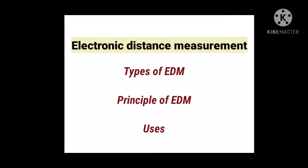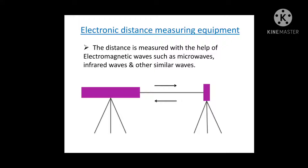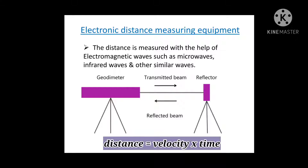In this video, let's discuss electronic distance measuring equipment used in modern surveying instruments. The distance is measured with the help of electromagnetic waves such as microwaves, infrared waves, and other similar waves. An EDM and a reflector are necessary to carry out the survey. The wave emitted from the EDM reaches the reflector and returns back. The distance is then measured using the time taken by the waves for emission and return, using the equation: distance equals velocity multiplied by time.